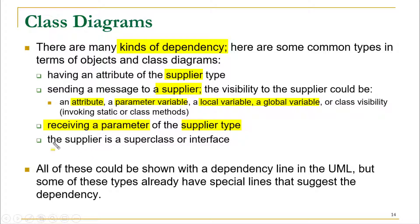Another type of dependency is when the supplier is a superclass or an interface. Whenever we have an inheritance relationship, the subclasses are dependent on the superclasses. All of these can be shown with a dependency line, which is a dashed line with an arrow. Some of these types already have special lines that suggest the dependency, as we will see in the coming examples.